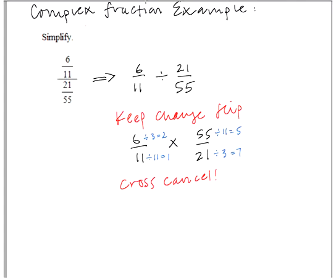So now that we have applied the cross-canceling process, we have a totally new problem, which involves smaller numbers. Instead of 6 over 11 times 55 over 21, we have 2 over 1 times 5 over 7.